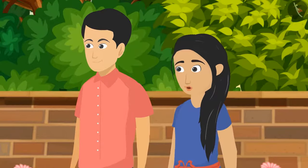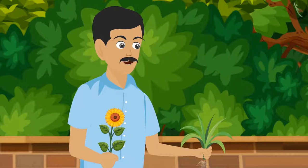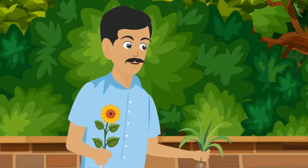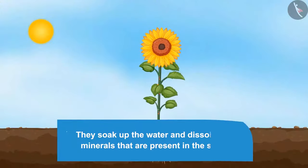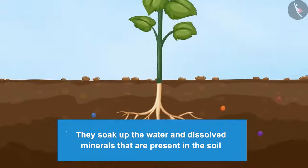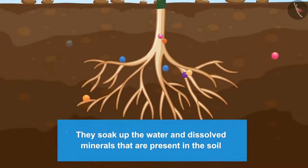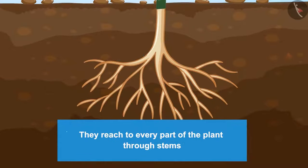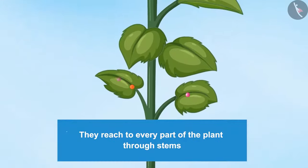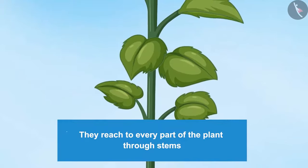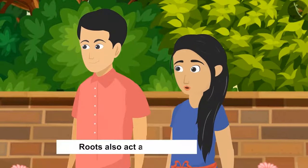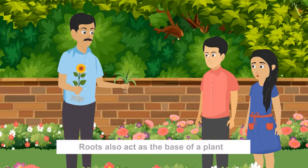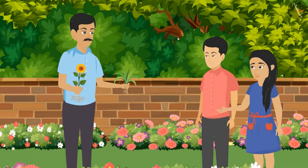Uncle, that is a very good piece of information. Roots are also very important parts of plants. They soak up the water and dissolved minerals present in the soil, and these reach every part of the plant through the stems. Other than this, the roots also act as the base of a plant — they hold the plant tightly in the soil.